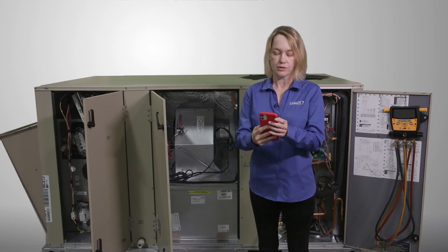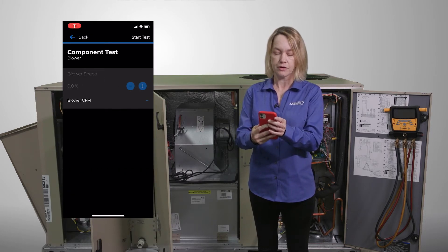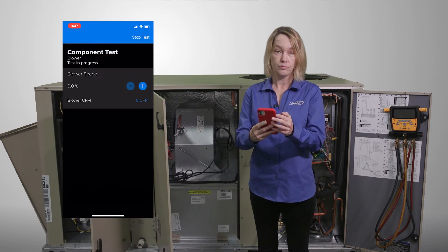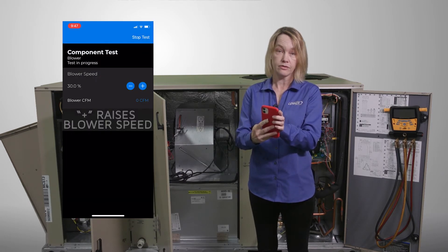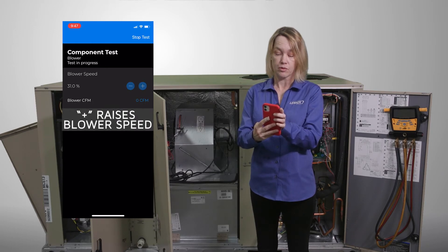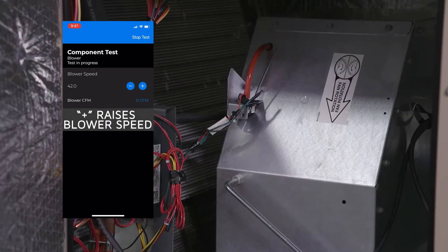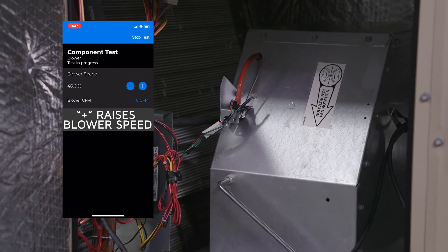Next we're going to do the blower test. Press blower. Press start test. Confirm that no one's in the way of the fans. Press continue. Then press the up or down button to regulate the speed of the blower. Once you hear the blower start up, press stop test.